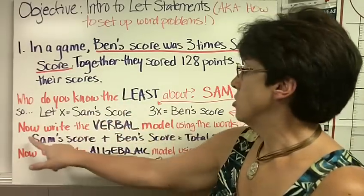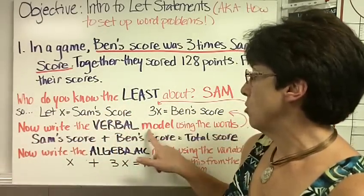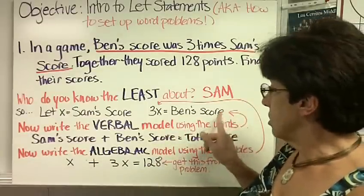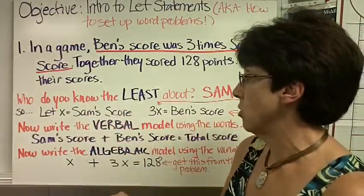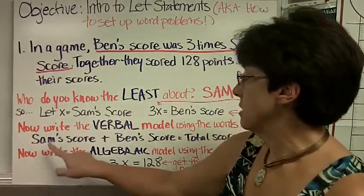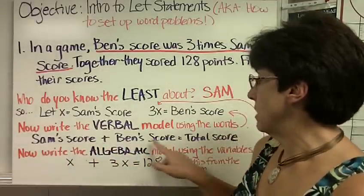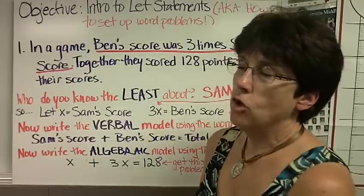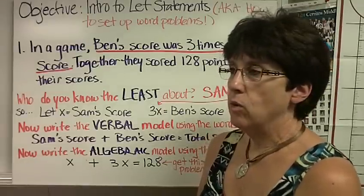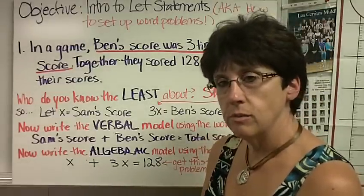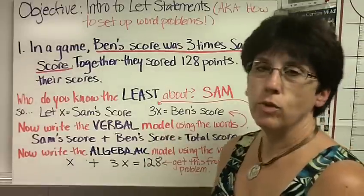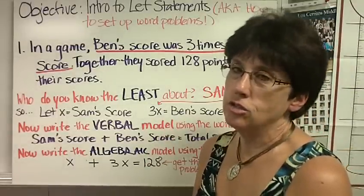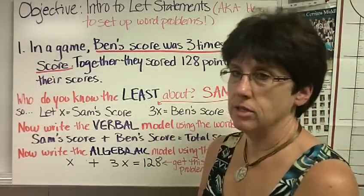Now we need to write the verbal model using the words Ben's score and Sam's score. And the verbal model is Sam's score plus Ben's score equals total score. Now, total score sounds funny, but we can't just write total. We have to be more descriptive. So, I always like to write total whatever, and it usually sounds funny, and that kind of makes me laugh.